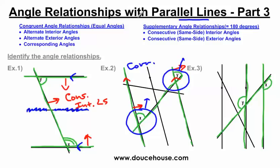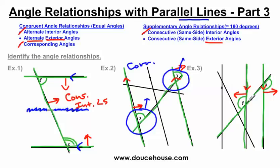Looking at the context clues: this line is parallel to this line. Angle y is outside the parallel lines and angle x is also outside the parallel lines, so the word exterior should be in the answer. That eliminates interior and corresponding options, leaving alternate exterior angles or consecutive exterior angles. Alternate exterior angles are on opposite sides of the transversal; consecutive exterior angles are on the same side. Angle y and angle x are on opposite sides of the transversal, so this is an alternate exterior angle relationship.